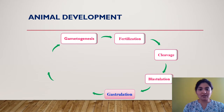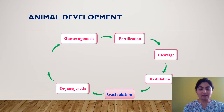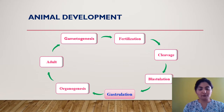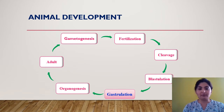Then gastrulation happens, where cells move from one place to another and establish themselves in a specific manner to form the germ layers. The next stage is organogenesis, where different organs are formed from different germ layers. Finally, the adult form is attained, and when it reaches maturity it begins gametogenesis again, so the cycle continues. Today we are mainly interested in the gastrulation process.